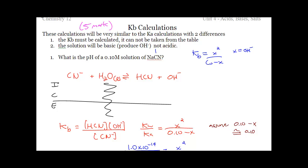So here's the kicker: we are dealing with weak bases. Weak bases don't have Ka's, they have KB's, and they don't make H3O+, they make OH-. Those are the two key differences.